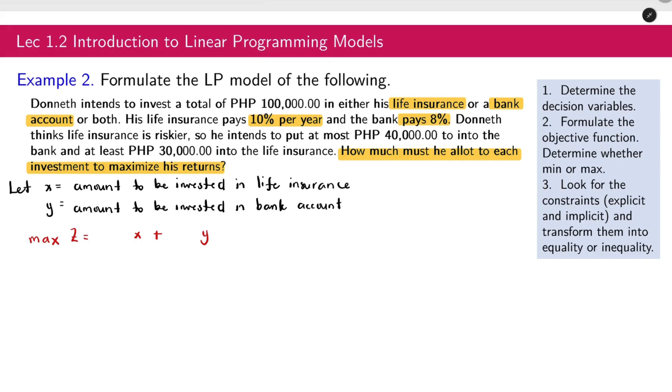Where is that in the problem? It says here, his life insurance pays 10% per year and the bank pays 8%. Meaning to say, whatever amount he invested in the two, we multiply by 10% and 8% to get how much he will receive. So it means that the coefficient of x and y in this problem will be: for x, we have 0.10 or 0.1. That is 10%. And then the other one, 0.08. This one is our objective function.